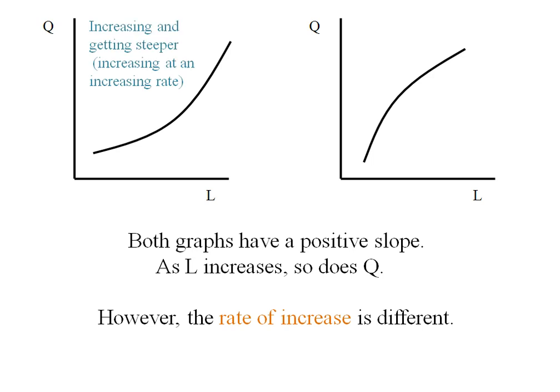The graph on the left is increasing but it's also getting steeper so we might call that increasing at an increasing rate. In the graph on the right it's still increasing but it's getting flatter so we might say that's increasing at a decreasing rate.